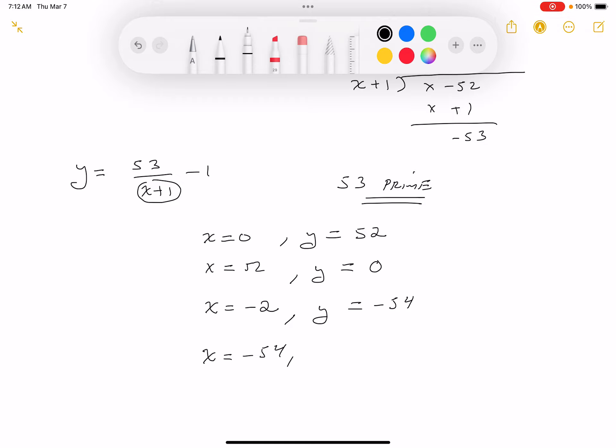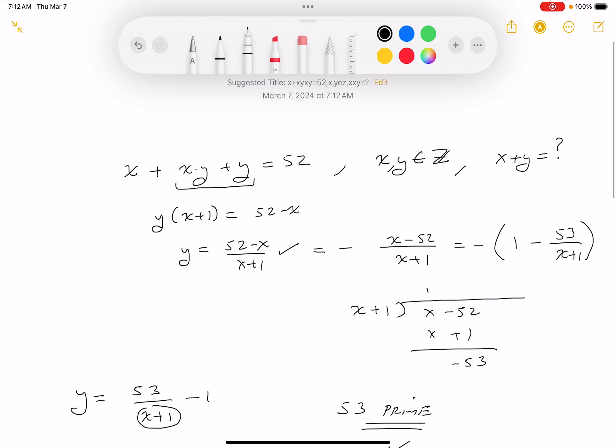As long as—what was their question? Their question is what's the sum of x plus y. Well, one possibility is 52. They both get 52. The other possibility is minus 56. They both get minus 56. These are the two answers. Now that's one way to do it.